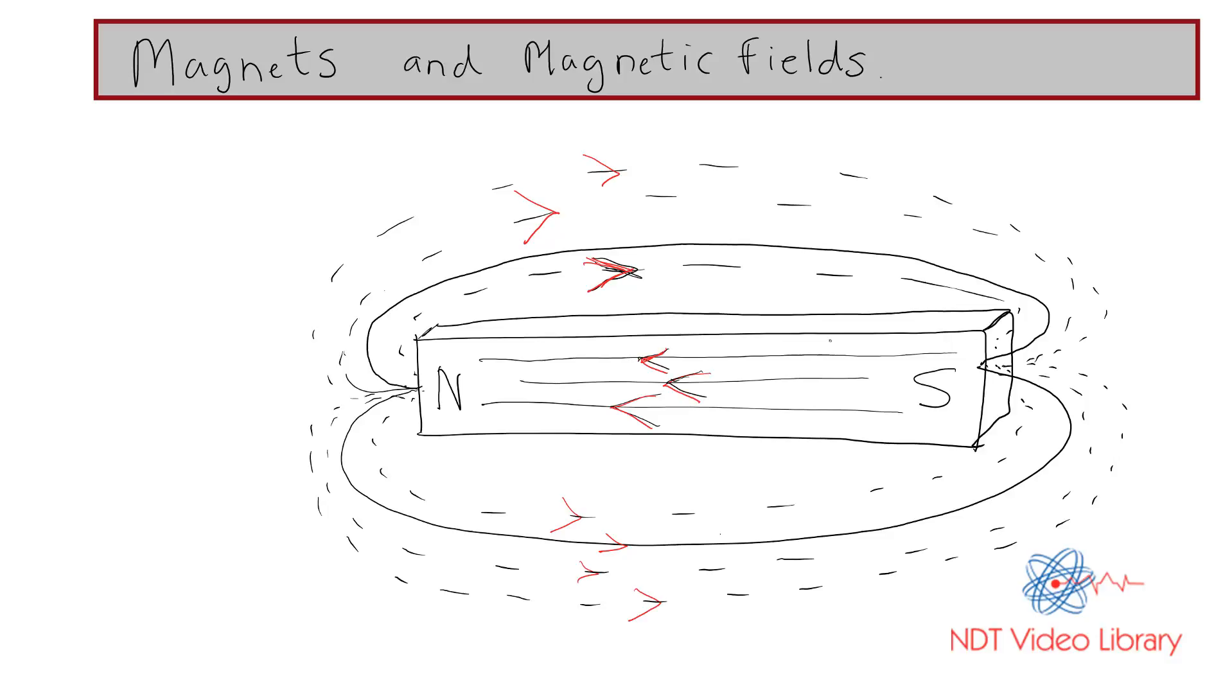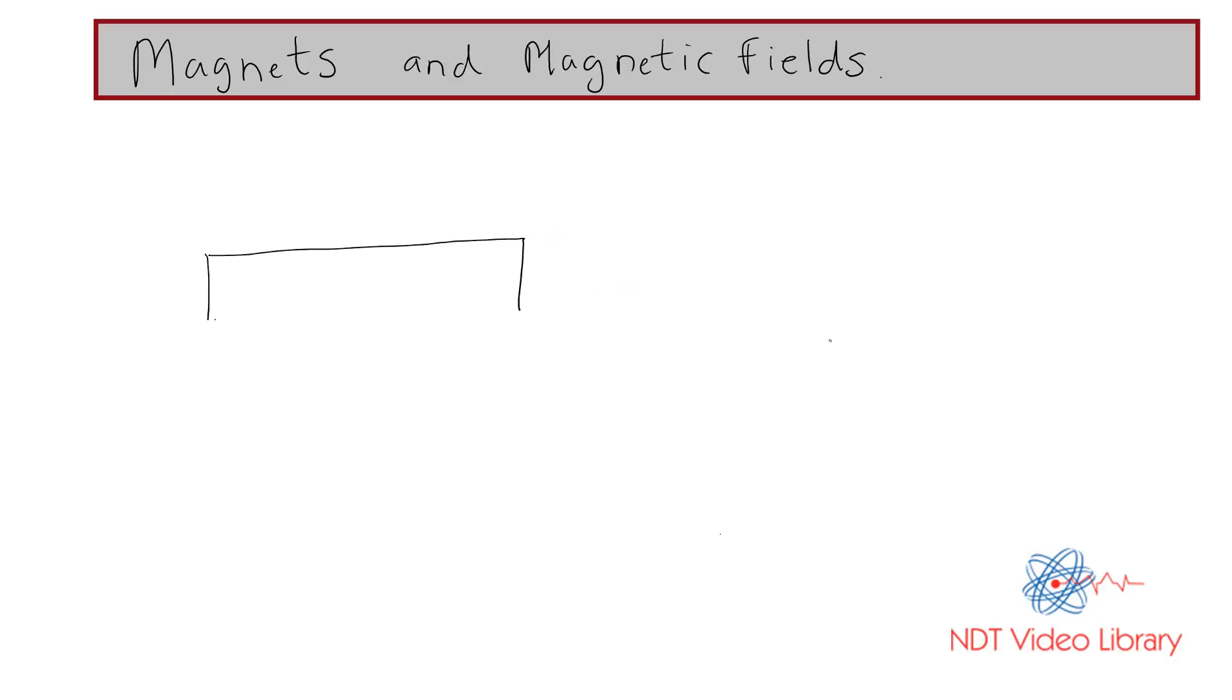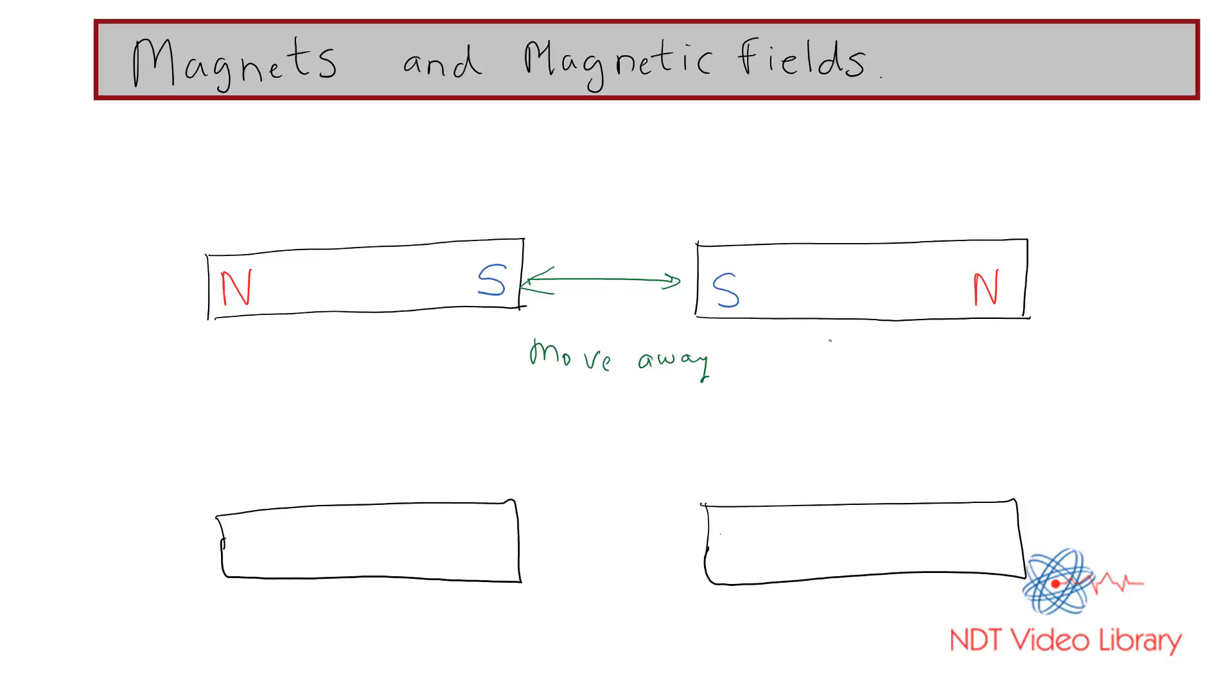Now consider two bar magnets with north and south poles, and the second bar magnet positioned such that the two south poles are facing each other. When this happens, the magnets tend to move away from each other. Like poles move away from each other.